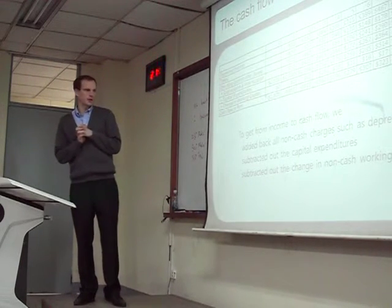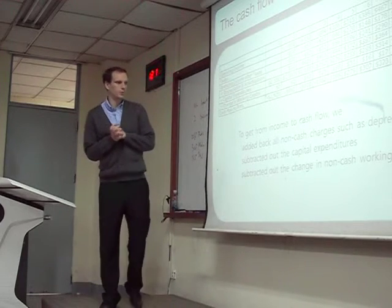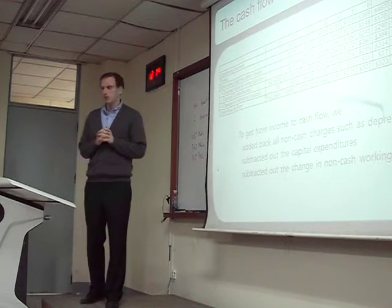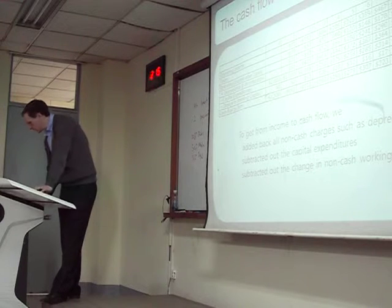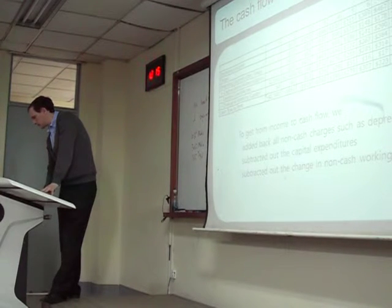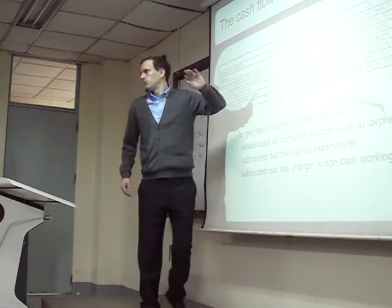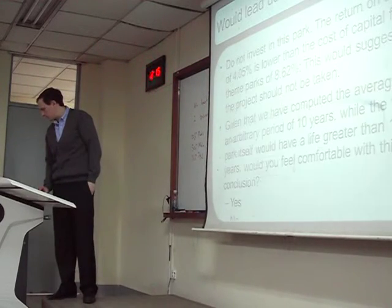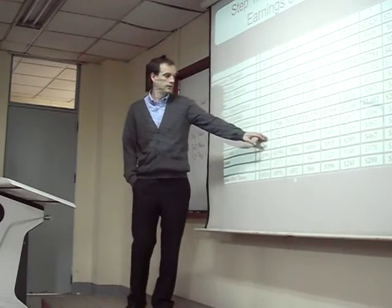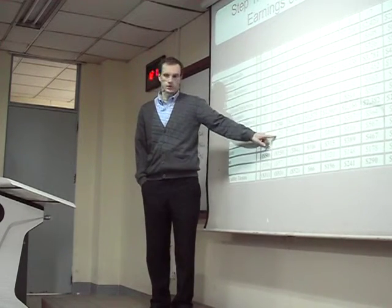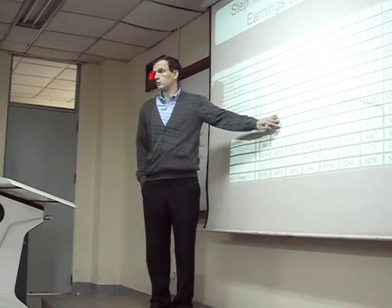We said depreciation is non-cash. We also have to subtract out the change in non-cash working capital and the capital expenditures. We start off with operating income, then taxes, then operating income after taxes. And we are going to add back in depreciation. In the accounting statement, we deducted depreciation — that was 788 minus 425 — so our profit looked less and we paid less tax. But was that a cash number? No, it wasn't actual cash. This was just using accounting.